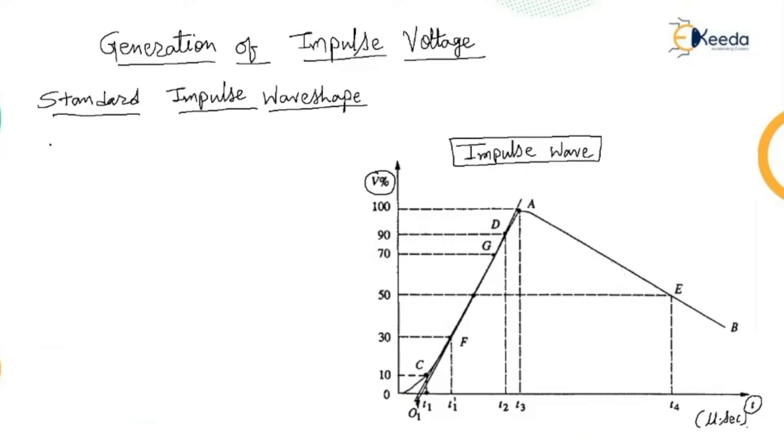There is a simple difference in generation of high frequency high voltage and impulse voltage. In high frequency, the rise in voltage takes large time. So, steady increase in the voltage, slow increase in the voltage is called as high frequency high voltage, and sudden increase in the voltage is called as impulse voltage.